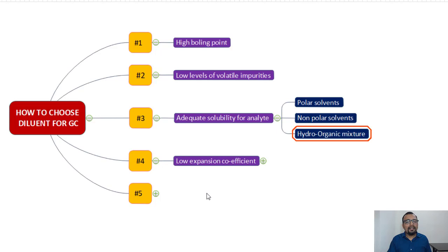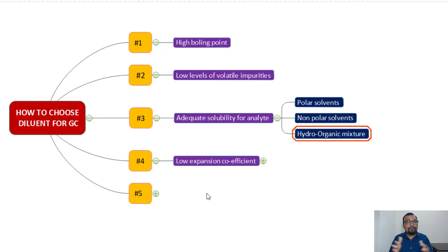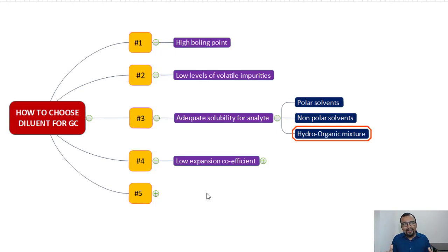The fourth important point is the low expansion coefficient. Try to select a solvent with a low expansion coefficient. In GC, we inject the sample in liquid form, and when it enters the injector port it converts into vapor. Every solvent has a degree of expansion, and if your diluent has a high degree of expansion when converting from liquid to vapor state, your glass liner may not be able to accommodate that expanded vapor volume.